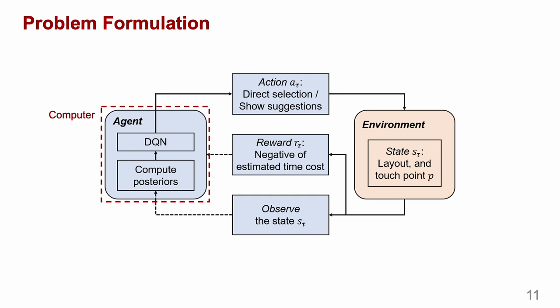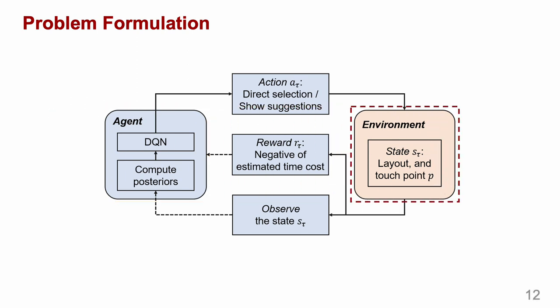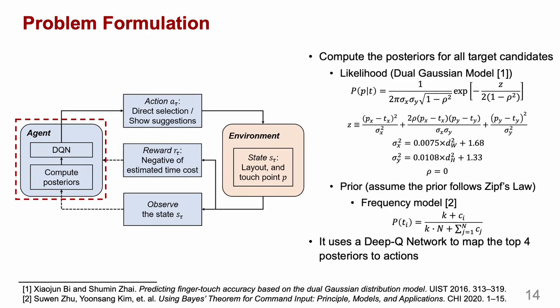Firstly, the computer plays as an agent, which interacts with the environment, and decides to directly select a target or show suggestions when given a touch point made by the user. At every time step, the environment has a state, including the layout and a touch point made by the user, and the agent can fully observe the state. After that, the agent computes the posterior probability for each target candidate using Bayes' theorem, given the touch point. The likelihood is computed based on a dual Gaussian model, and we assume the prior follows Zipf's law, using a frequency model to estimate its value.